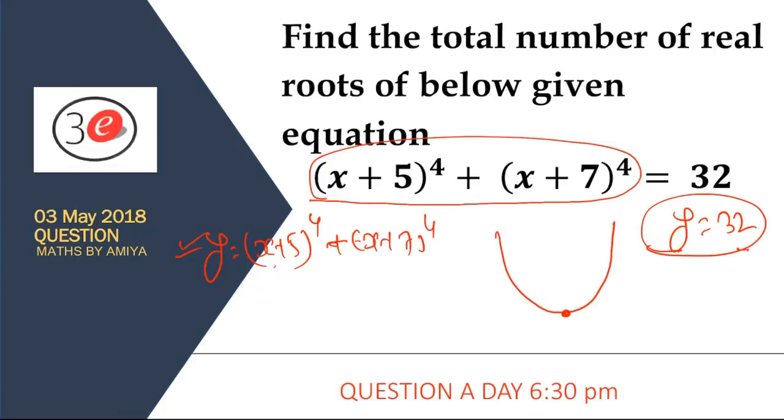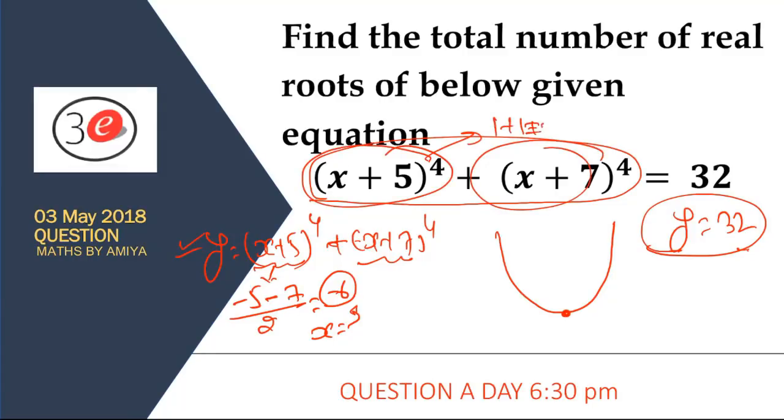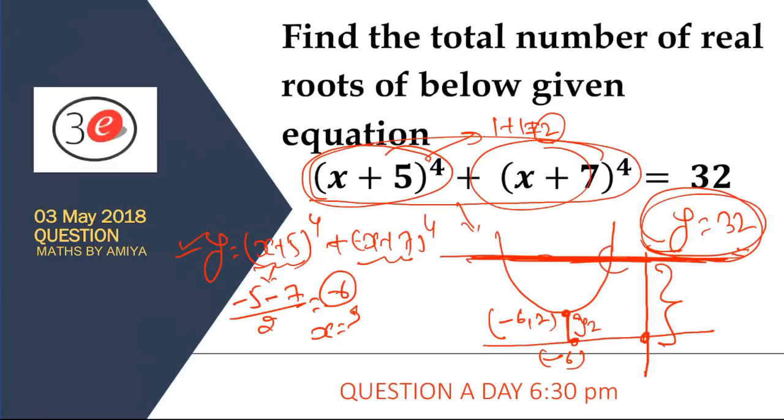We need to check the bottom point. Roots of the first expression are -5 and -7, with average -6. At x = -6, when we substitute, this becomes 1 + 1 = 2. So at x = -6, this point is at distance 2. If I plot on coordinate axis, the graph will look like this. The second graph y = 32 is at distance 32.